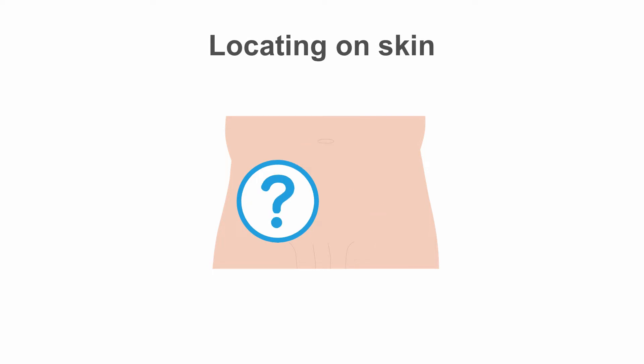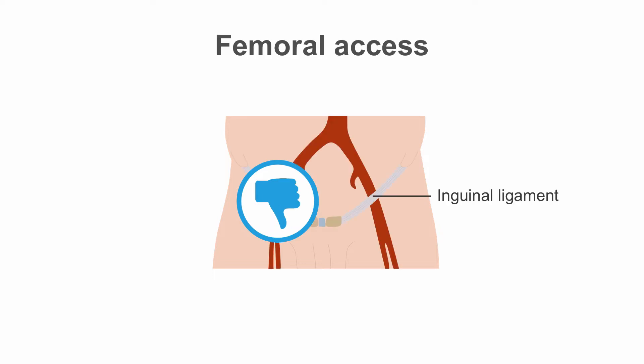We need to note where this is in relation to the surface anatomy on the skin. We often assume that the skin crease in the groin is a good representation of the position of the inguinal ligament. Sadly this is not the case — it can differ in position by over 10 centimeters.